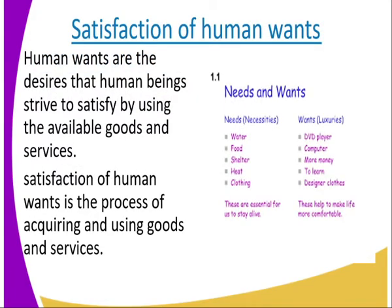Satisfaction of human wants — that is where we are starting. The first thing is to define what human wants are. Human wants are the desires that human beings strive to satisfy by using the available goods and services. Those desires include what you need for your survival: food, shelter, clothing, education, luxurious goods like a car. Satisfaction of human wants is a process of acquiring and using goods and services — that process of acquiring goods and services is when you are satisfying your needs.